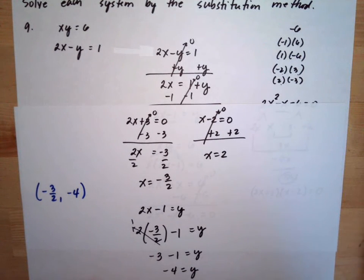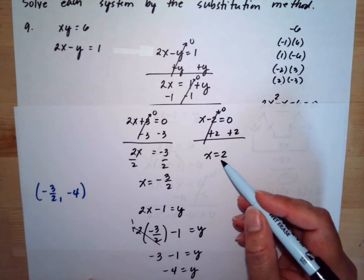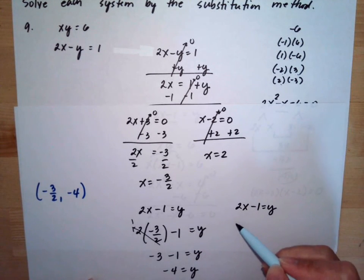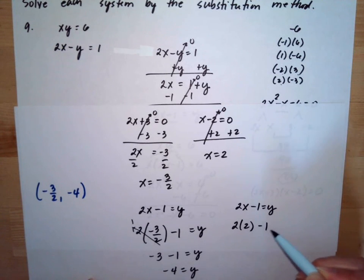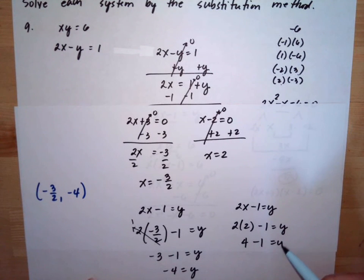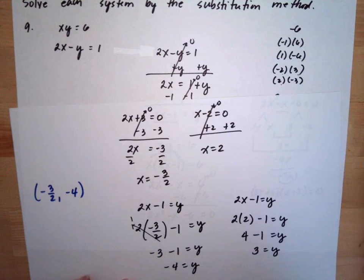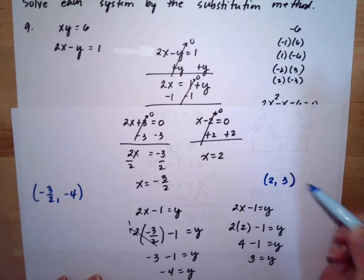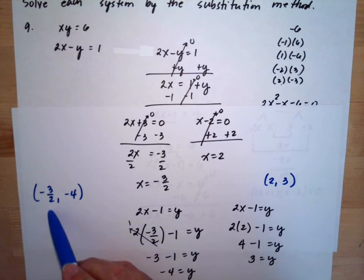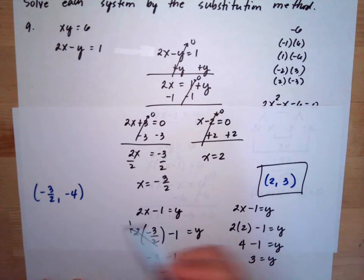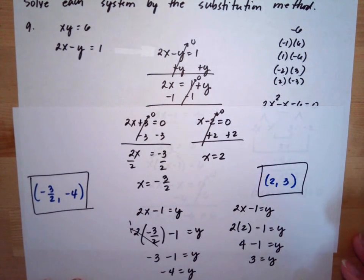For the second solution, we substitute x is equal to 2 into y equals 2x minus 1. So 2 times 2 is 4, minus 1 equals 3, so y is equal to 3. The second solution is (2, 3). We have two answers — both are valid solutions, meaning the two graphs meet at these two points.